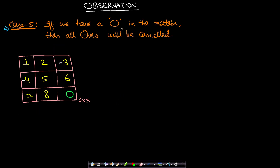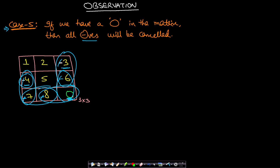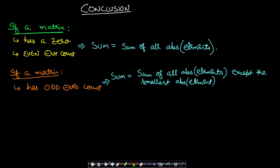Observation 5: if we have a 0 in the matrix, all negatives get cancelled out regardless of whether the count is even or odd. For example, pick -3 and 6, multiply by minus 1 — negative travels. Then pick -6 and 0 and multiply by minus 1. Zero multiplied by minus 1 remains 0, so the negative from -3 is removed. We can do the same for -4. So if you have at least one 0, all negatives can be eliminated no matter their count.